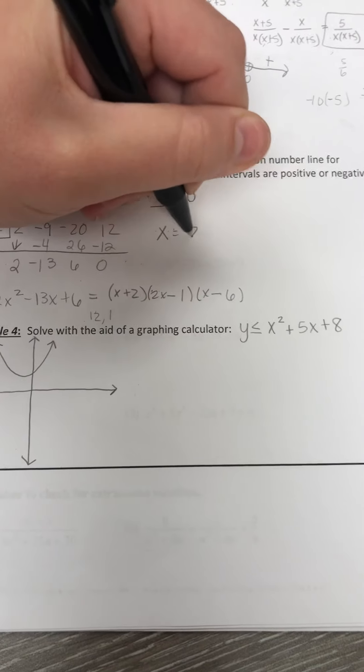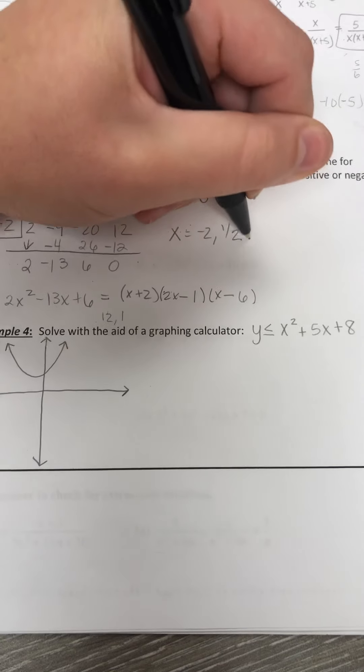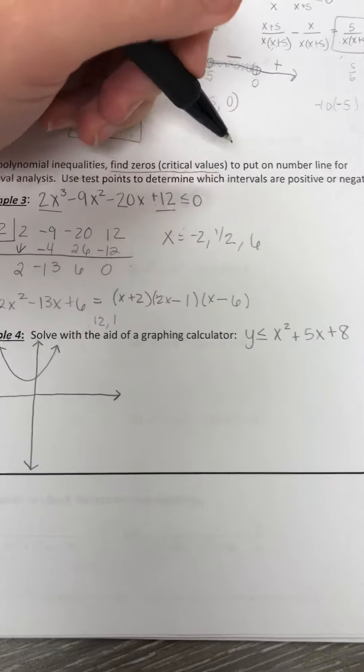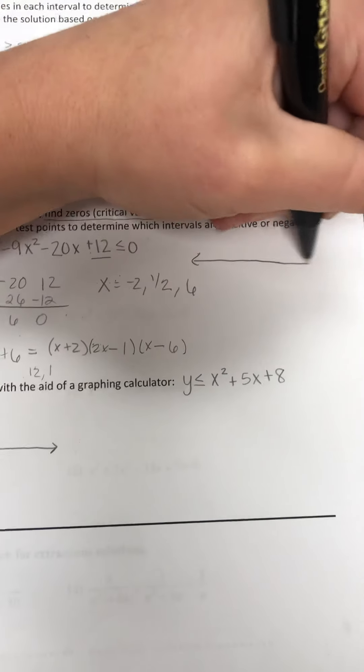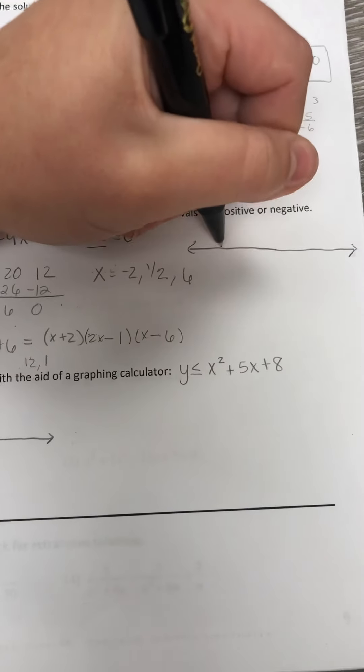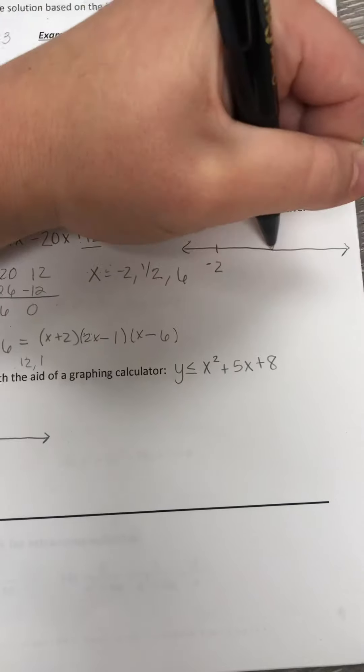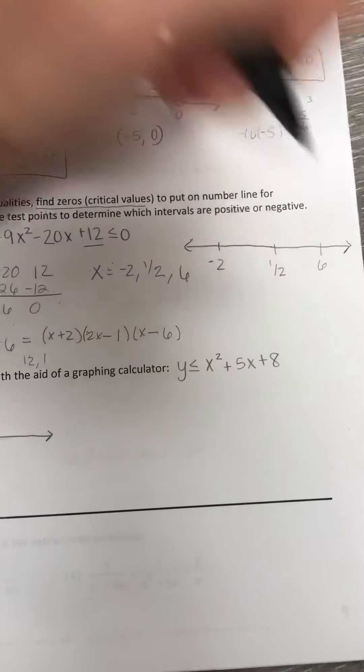Alright, so our x values would be negative 2, 1 half, and 6. Once we do that, we'll plug those in on the number line as well. So, negative 2, 1 half, and 6.